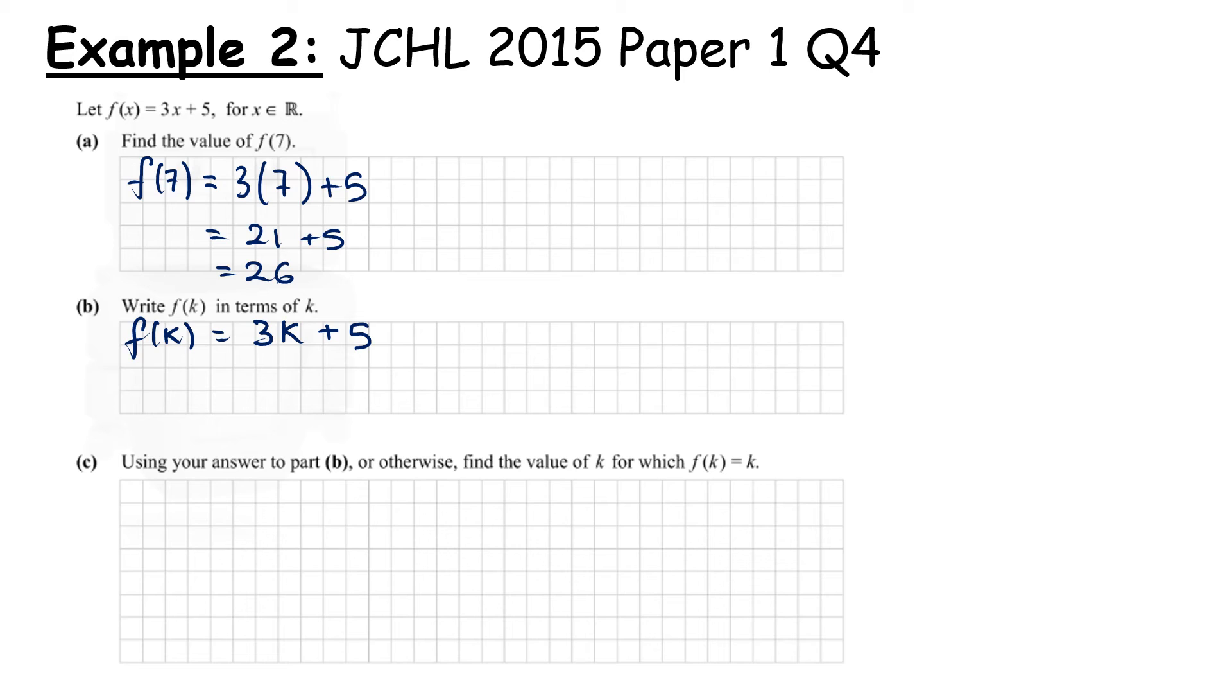Using your answer to b or otherwise, find a value of k for which f(k) equals k. We know f(k) is 3k plus 5, and that should equal k. So this is a linear equation. Let's subtract a k from both sides. Let's subtract a 5 from both sides. And we get 2k is equal to minus 5. Divide both sides by 2, and we get k is equal to minus 5 over 2, or if you prefer, minus 2.5. It is really important that you recognize whatever value they give you in the bracket, that is our input, and we put that exactly where the x had been.